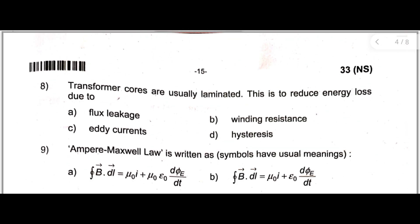Next, question number eight. Transformer cores are usually laminated. This is to reduce energy loss due to - option A: flux linkage, option B: winding resistance, option C: eddy currents, option D: stasis. Here the correct answer is option C: eddy currents.